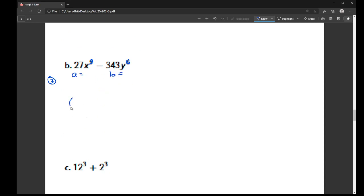So I need to identify my A and identify my B. And then the formula itself says A minus B times A squared plus AB plus B squared. All right, so again, I'm taking the cube root of this. So this is 3X cubed. And then here I said the cube root of 343 was 7. And then Y squared, because 6 divided by 3 is 2. So where the A's are, I'm putting in 3X cubed. And then where my B's are, I'm going to plug in 7Y squared.